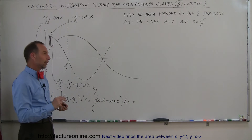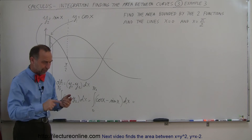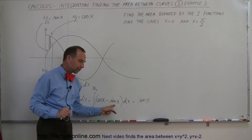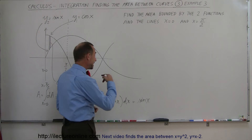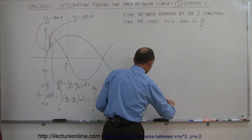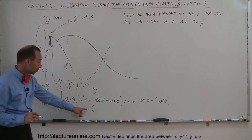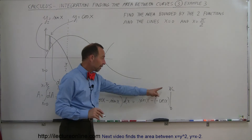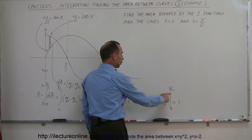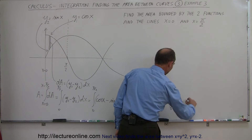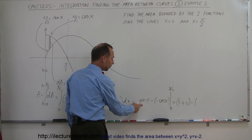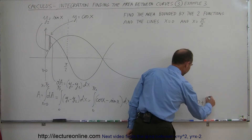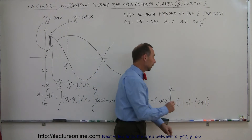The integral of cosine of x is sine of x, and since the derivative of sine of x is cosine of x, the integral of sine of x is negative cosine of x, giving us minus times minus cosine of x. Evaluating from 0 to pi over 2: the sine of pi over 2 is 1, cosine of pi over 2 is 0, minus sine of 0 which is 0, plus cosine of 0 which is 1. So we get 1 minus 1, which equals 0.